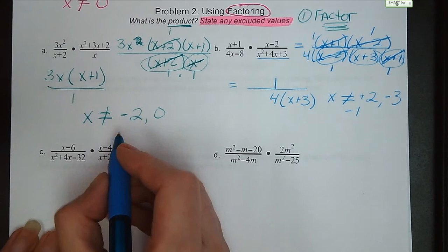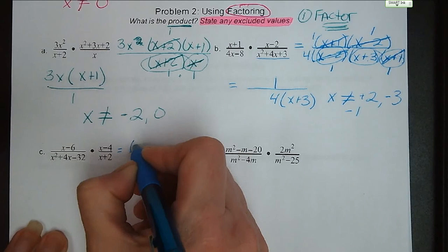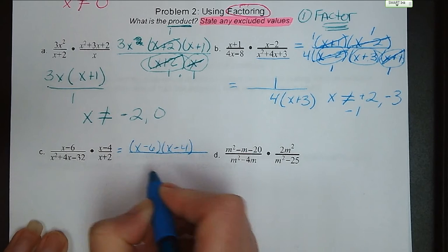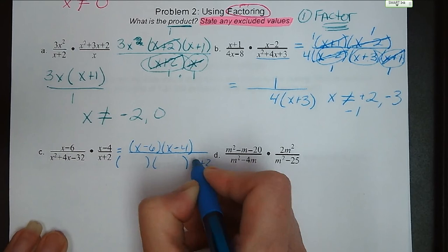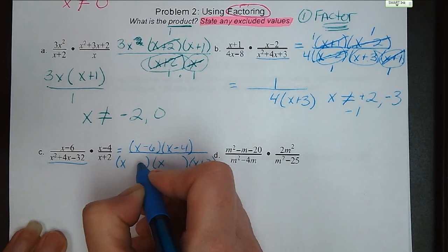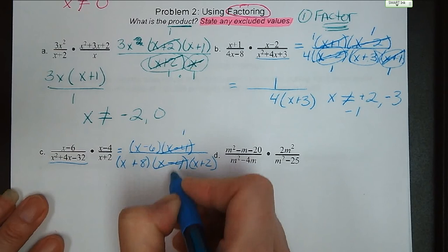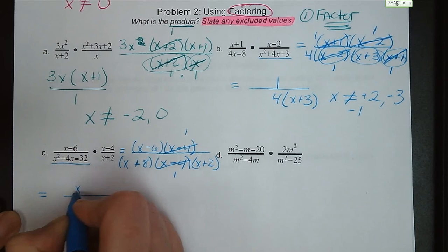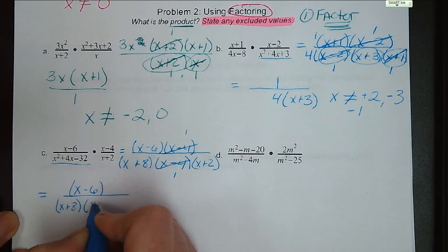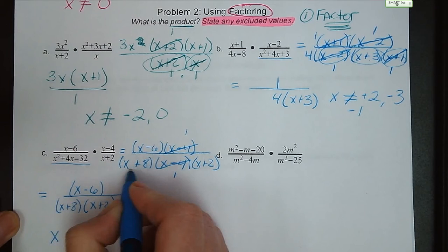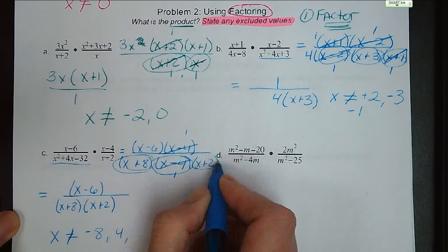Letters C and D, try on your own. Letter C: x minus 6 and x minus 4 stay as-is. The denominator x squared plus 4x minus 32 factors to x plus 8 and x minus 4 — factors of negative 32 that add up to 4. The x minus 4s cancel, and we're left with x minus 6 over x plus 8 times x plus 2. Excluded values are negative 8, positive 4, and negative 2.